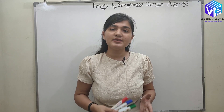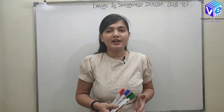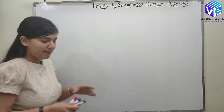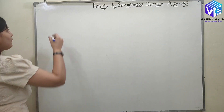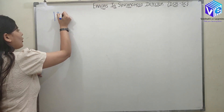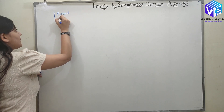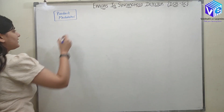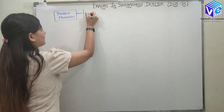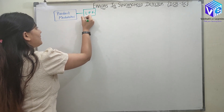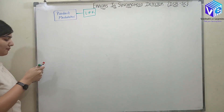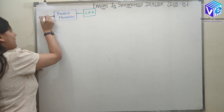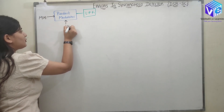Only synchronous reception is possible for DSB-SC type of amplitude modulation. I hope you remember the block diagram — it was something like this. I had a product modulator, and the next block is the low pass filter. In the product modulator, I had two inputs. The first input is M(t), where M(t) represents my modulated signal, and the second input was C(t).